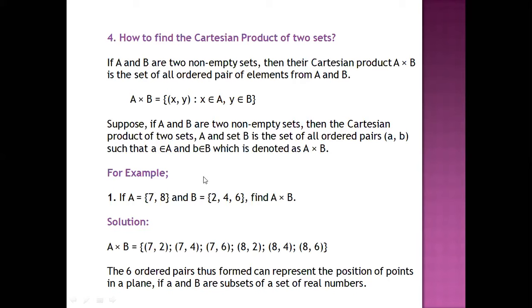Then (7, 6), then (8, 2), (8, 4) and (8, 6). We combine all elements of A with all elements of B. Thus we can find the Cartesian product.